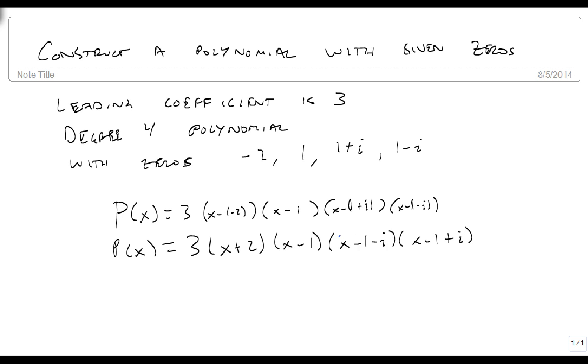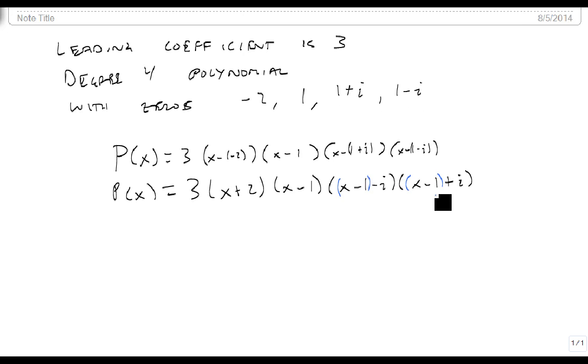And then I'm going to regroup it, because we're going to multiply these together. So on this side it's real easy. We get x squared plus x minus 2.